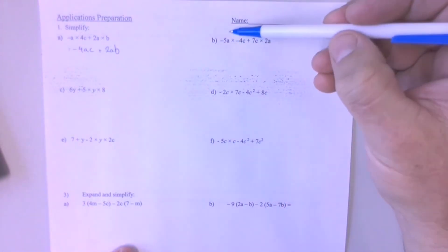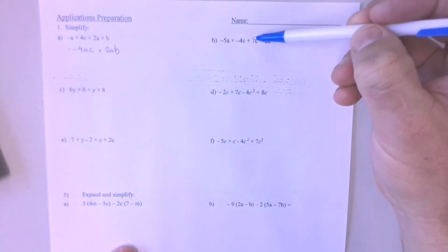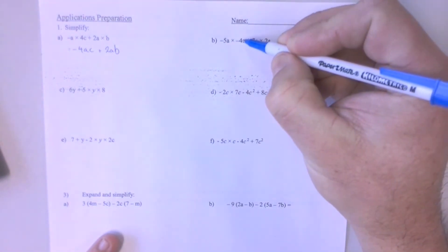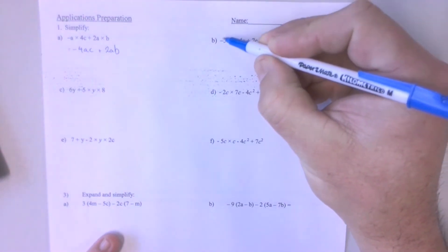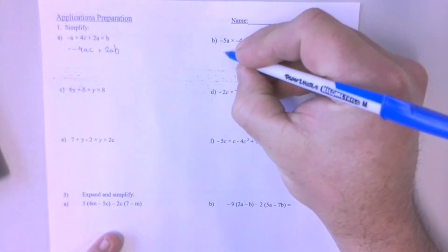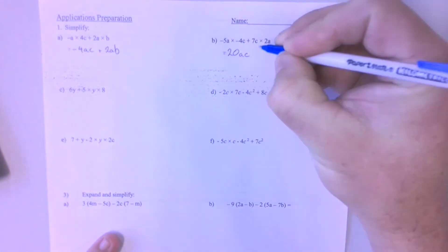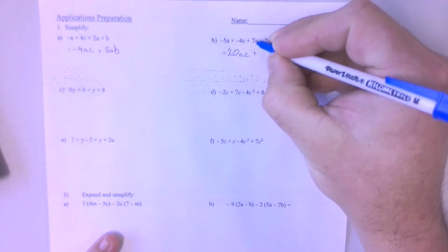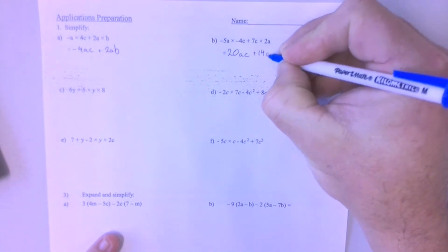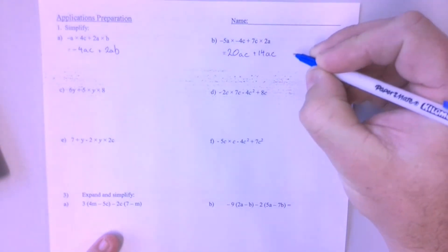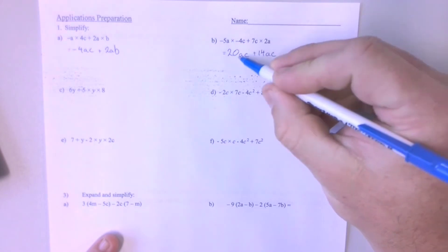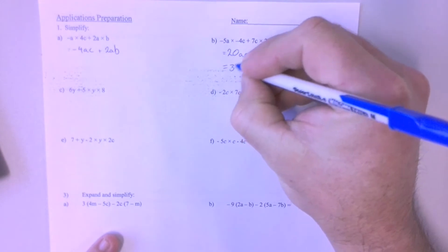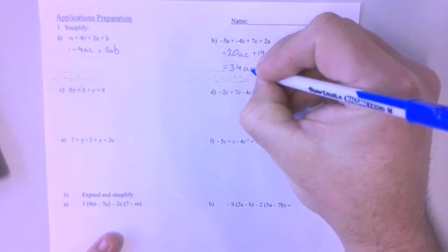Question 1B has got multiplication and addition in it. So we'll need to do our multiplication before our addition. We've got minus 5A times minus 4C. So minus A times minus 4 is positive 20, and then AC. And we have 7C times 2A makes 14AC. I'm writing them in alphabetical order. Now these two are like terms — they both have the same letter combinations — so we can add them together making 34 groups of AC altogether.